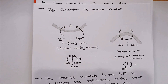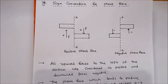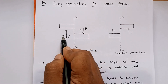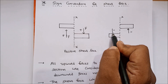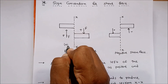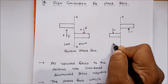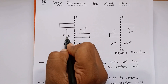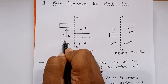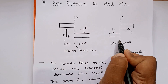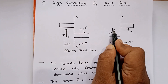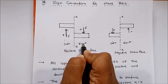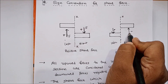Now we discuss about sign convention for shear force. All upward forces to the left of the section are considered as positive and downward forces are taken as negative. Similarly, all downward forces to the right of the section are considered as positive and all upward forces to the right of the section are taken as negative.